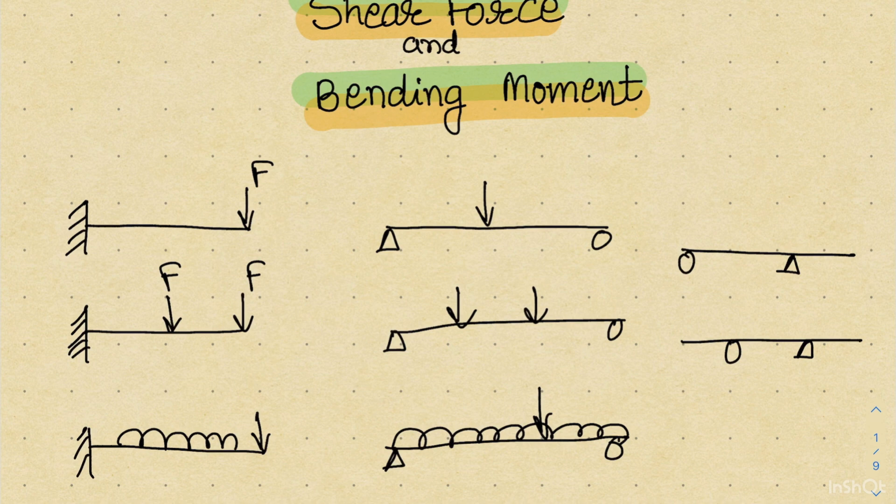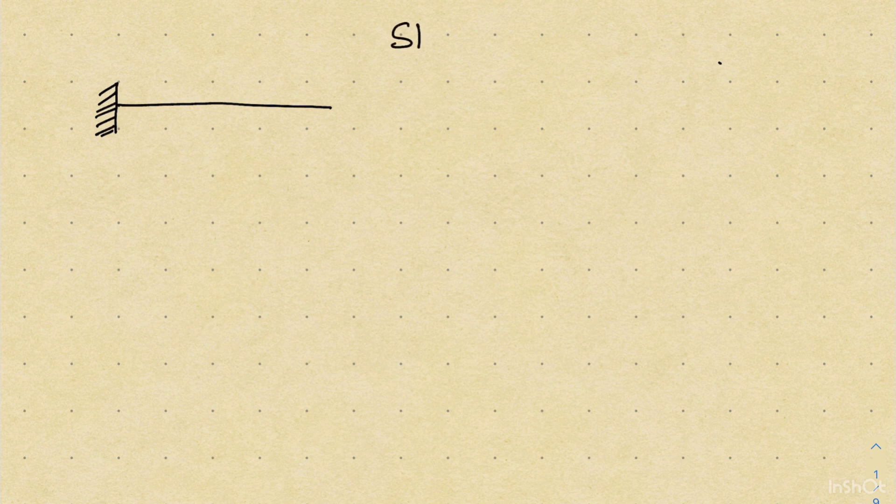Let us start with the shear force and bending moment diagram of a simple cantilever beam. We will start with the basic concept and also talk about the physical significance of shear force and bending moment. First, let us talk about shear force — what is a shear force? Shear force is nothing but the resultant force acting on a beam and trying to produce a shearing effect.